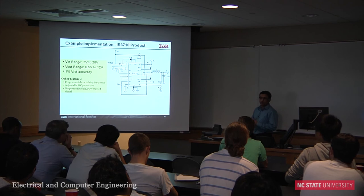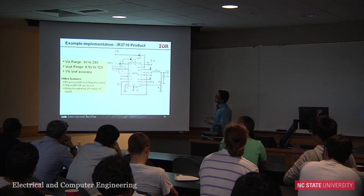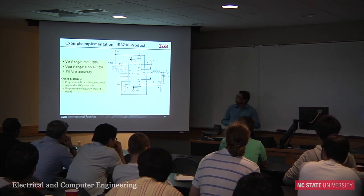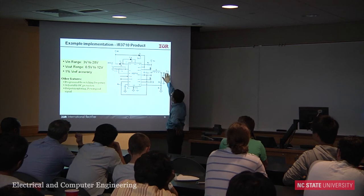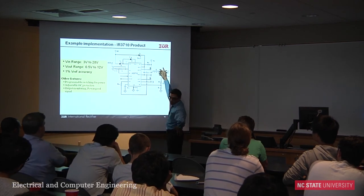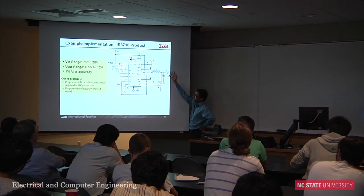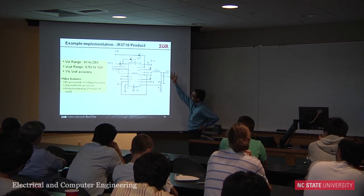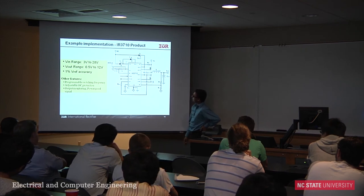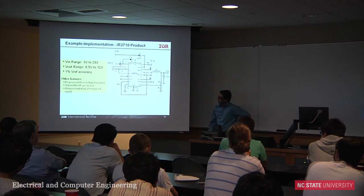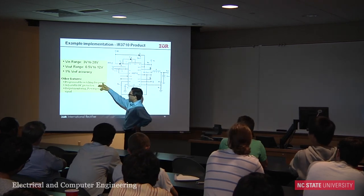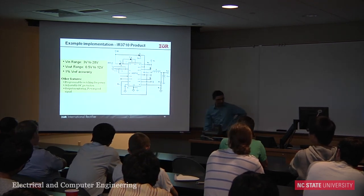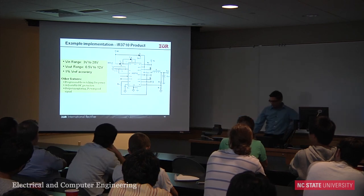The IR3710 is the product used to demonstrate these concepts. Its specs: V_in range is 3 V to 28 V, V_out range is 0.5 V to 12 V, and output voltage regulation accuracy is 1% of V_ref. Additional features include programmable switching frequency, adjustable overcurrent protection, and output voltage monitoring.